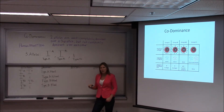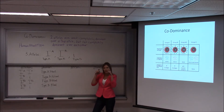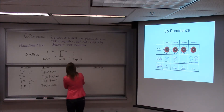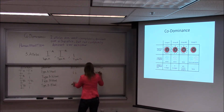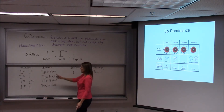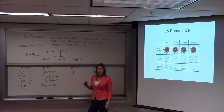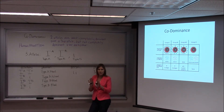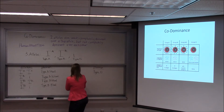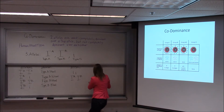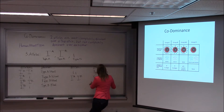The only way you can get type O blood is if you got two type O alleles — little i. You need to be homozygous recessive to have type O blood. What happens if you get an A and a B? Who's dominant? Neither. They are both expressed. So if you got an A allele from one parent and a B allele from the other, you have type AB blood. Both are expressed.